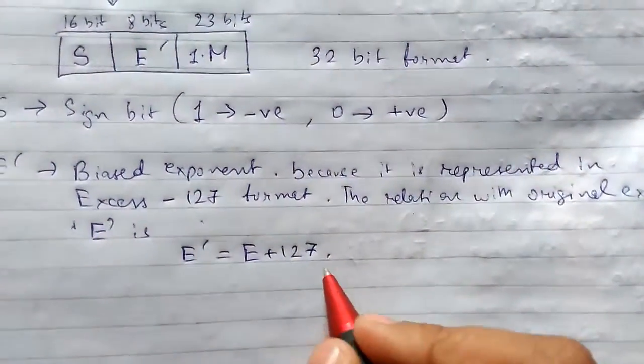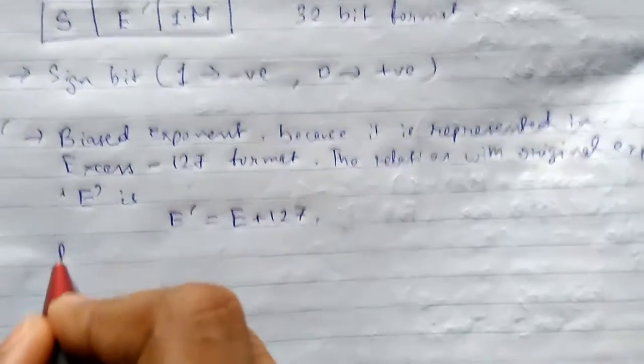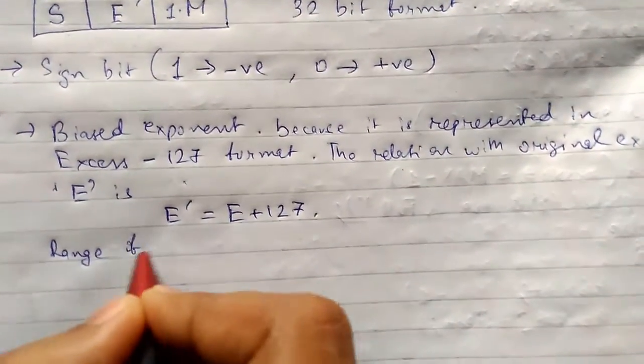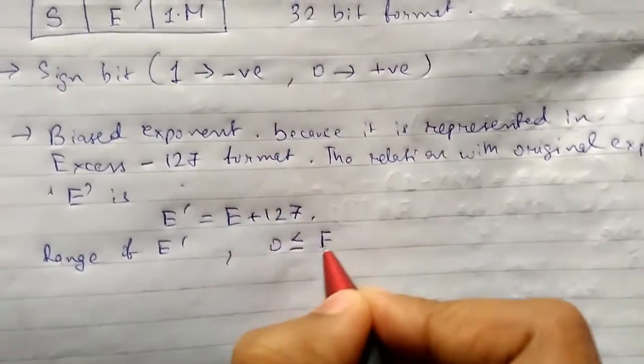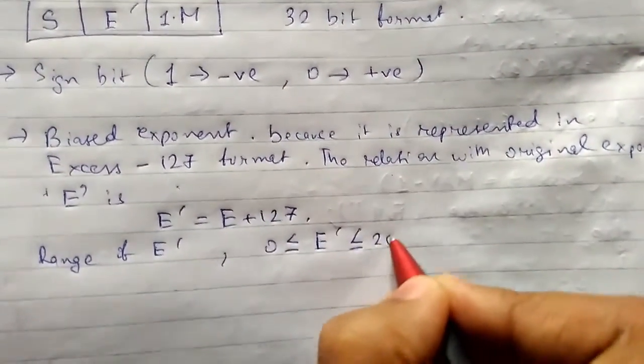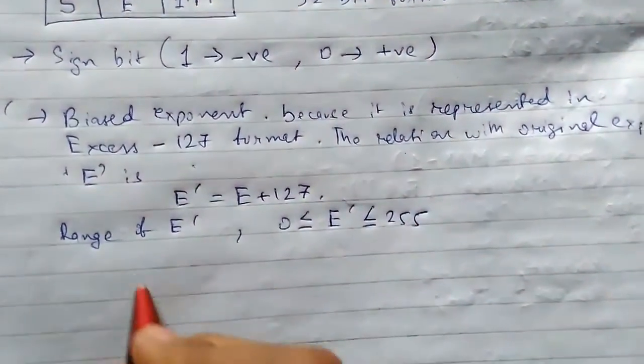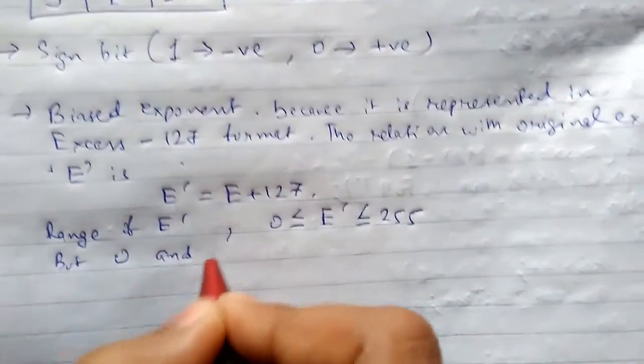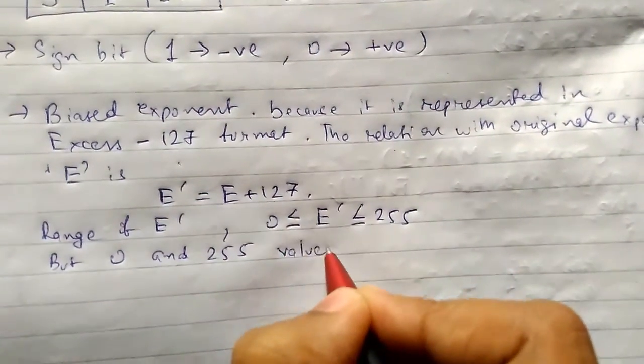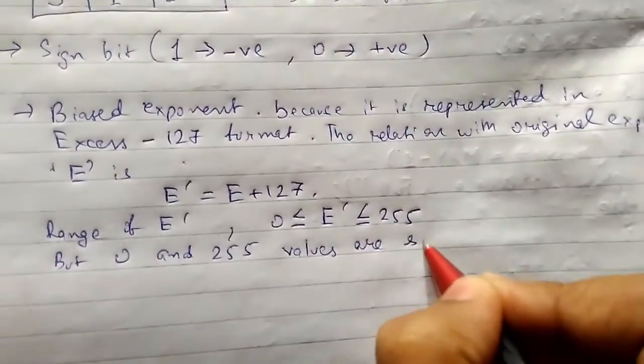The range of E prime is 0 to E prime less than 255. But 0 and 255 values are stored for special values.